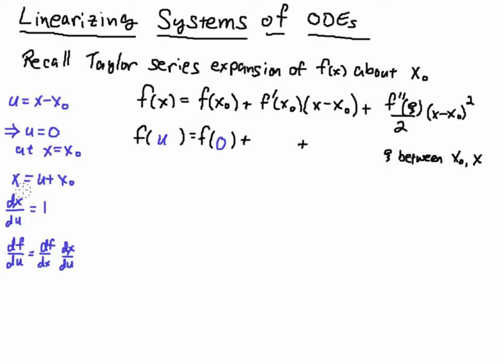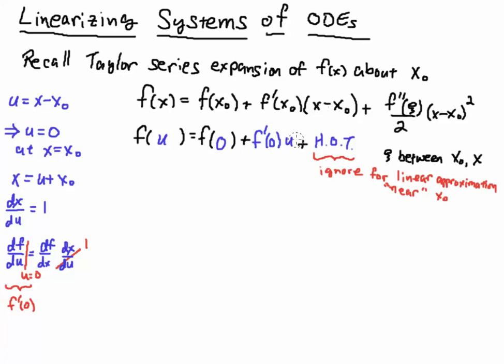And then so if I think about that here, if I shift this over, this x₀ over to the other side, I get x is equal to u plus x₀. I take the derivative with respect to u. I do a little chain rule here. df/du is equal to df/dx times dx/du. And now if I plug all that in, I get an f prime zero.